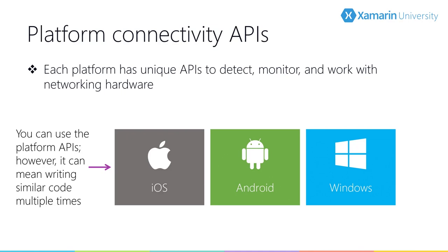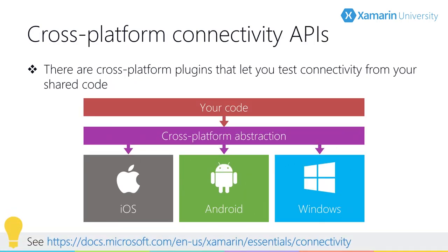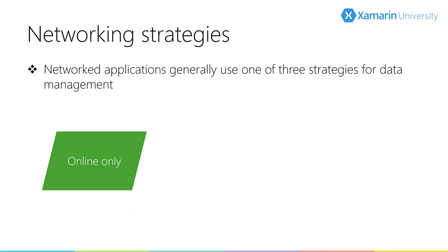Before attempting any remote network call, you first need to check to see if you have a working network connection. Each platform has its own native APIs to do this connectivity testing, and we cover these in our XAM150 class. There's also an alternative approach using a cross-platform library for connectivity checking. When you have networked applications, they will generally fall into one of three categories. First, there's online only — where some functionality is only available when you're online. Online banking apps, Skype, and chat applications all fall into that category.